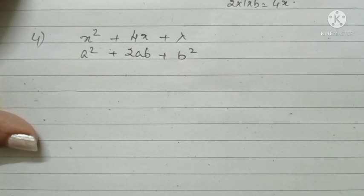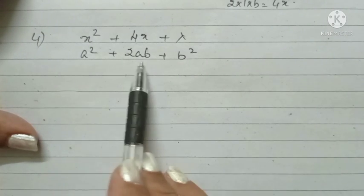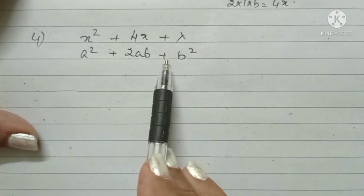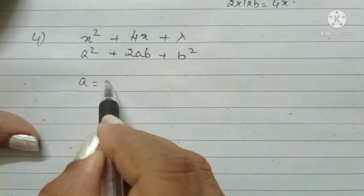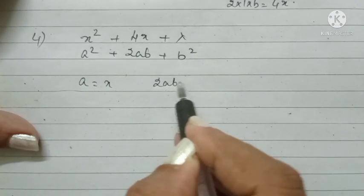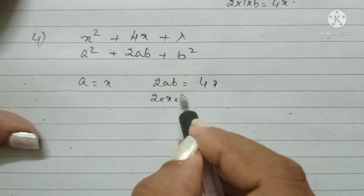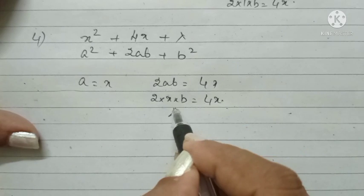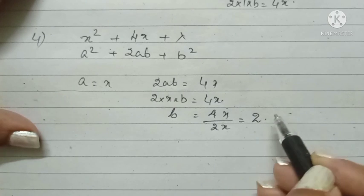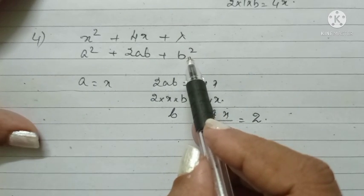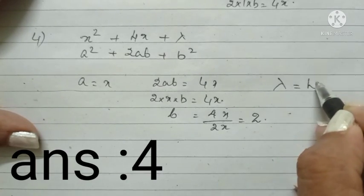In the question, it is given that X squared plus 4X plus lambda is a perfect square. We are comparing with the identity A squared plus 2AB plus B squared. Then, we will get A squared equal to X squared. Therefore, A equal to X. Again, 2AB is equal to 4X. 2 into A is X into B equal to 4X. B equal to 4X divided by 2X. We will get B as 2. Then, what is B squared? B squared will be 4. Therefore, lambda will be equal to 4.